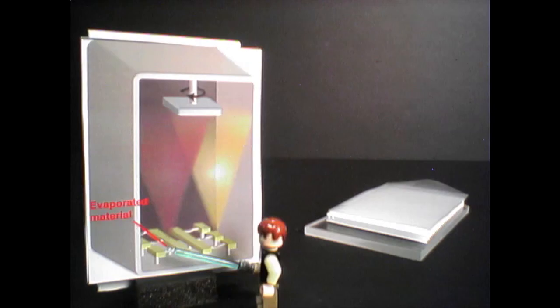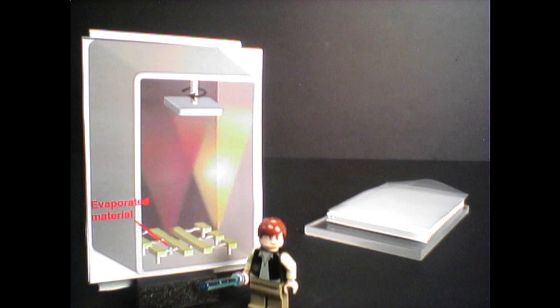We start with our solar cell, which would be spinning here at the top of the chamber. Now we heat up the material until it turns into a vapor, which then condenses as a thin film on the solar cell, the same way that steam condenses on top of a cooking pot's lid.